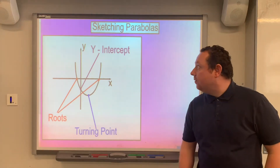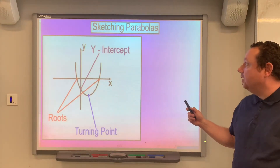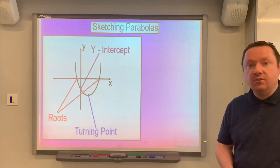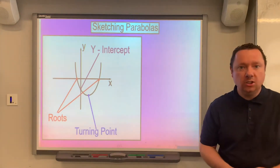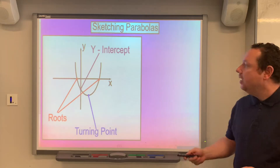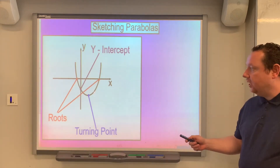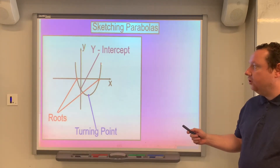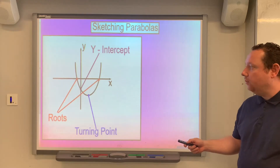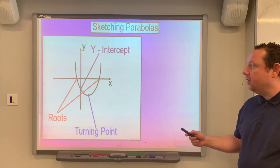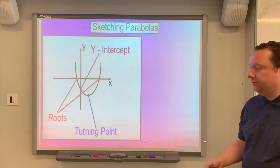Welcome to ClareMaths. Today we're going to be looking at higher maths and sketching parabolas. Parabolas are the shape you get when you take a quadratic equation — something with an x squared in it. The shape you get goes upward if the coefficient of x squared is positive, or it's flipped upside down if the coefficient of x squared is negative.